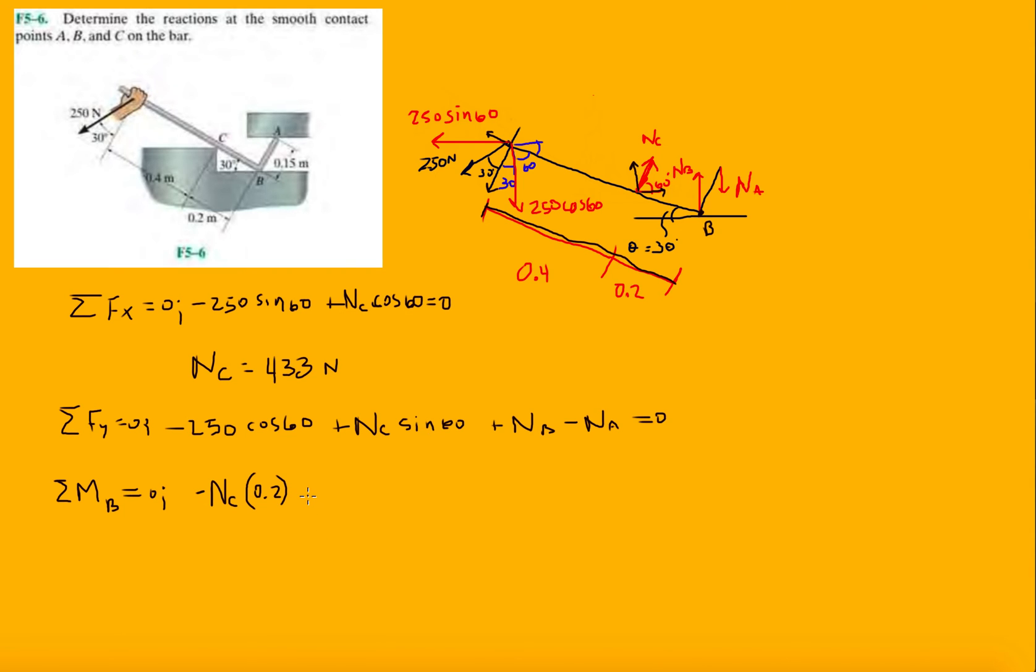So we're going to do 250 cosine 30 times 0.6, and then which direction will make it rotate? Counterclockwise, so positive.